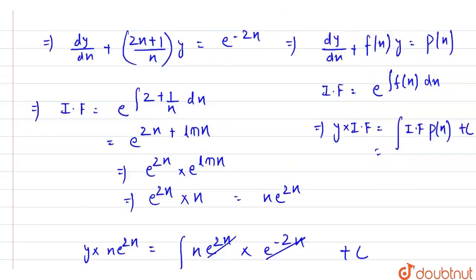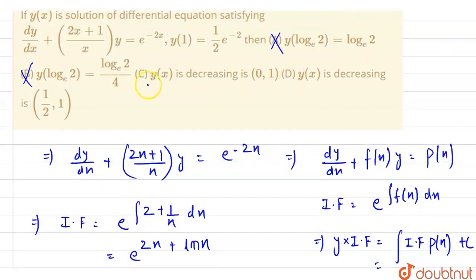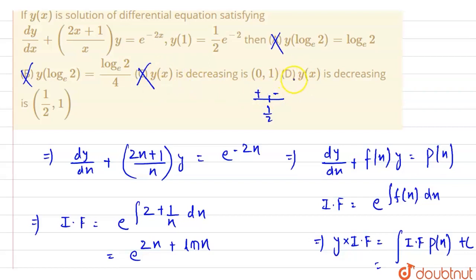Let us check the options. Option C says y(x) is decreasing on (0, 1) — but we know it is increasing on (0, 1/2) and decreasing on (1/2, 1), so option C is wrong. Option D says y(x) is decreasing on (1/2, 1). From our analysis, this is correct. So option D is our answer. Thank you.